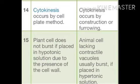Plant cells do not burst if placed in a hypotonic solution due to the presence of the cell wall. Animal cells lacking a contractile vacuole usually burst if placed in a hypotonic solution. Some of the parts I covered are not in your syllabus, so you will study them in higher classes. I included this for general knowledge.